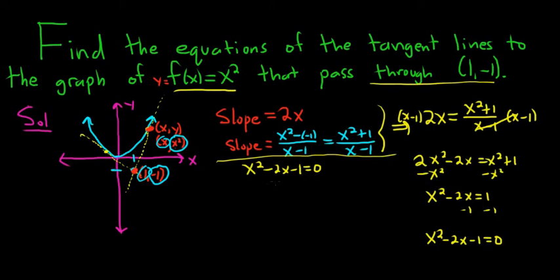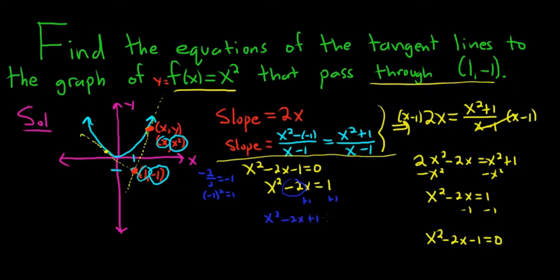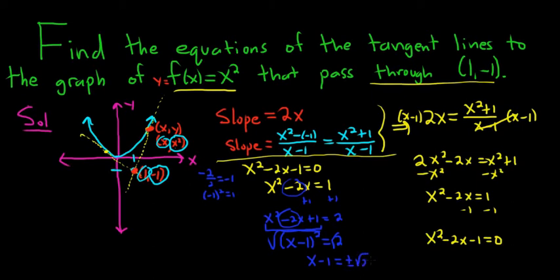So this does not factor nicely, so I'm going to complete the square. Add 1 to both sides: x squared minus 2x equals 1. When you complete the square, you take the coefficient of x, divide it by 2, and square it. The coefficient of x is negative 2, so negative 2 over 2 is negative 1, and when we square that we get 1. Add that to both sides: x squared minus 2x plus 1 equals 2. This is a perfect square trinomial — it factors as x minus 1 squared equals 2. Take the square root, and you always get a plus or minus. Add the 1, and so we get x equals 1 plus or minus the square root of 2.